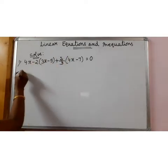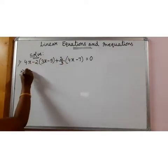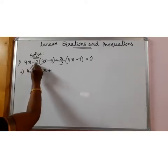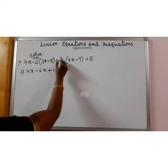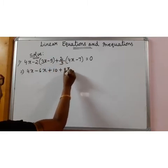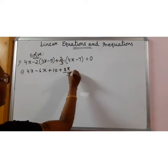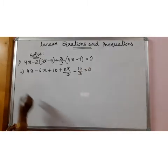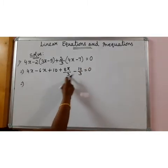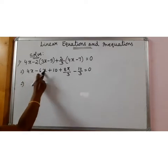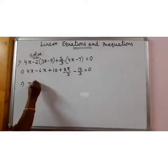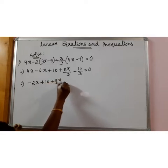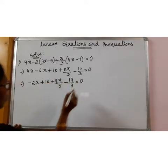First let us open the brackets. 4x minus 6x minus into minus plus 2 by 10 plus 2 by 8x by 3 plus into minus minus 2 by 7 of 14 by 3 that equal to 0. That implies here we got by 3. Here 4x minus 6x is minus 2x plus 10 plus 8x by 3 minus 14 by 3 is equal to 0.